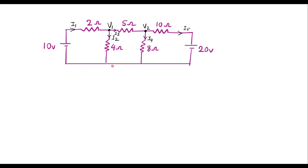We need to solve this using node analysis. In node analysis we apply Kirchhoff's current law to each non-reference node. V1 and V2 are the non-reference nodes. We assume the bottom node as the reference node whose voltage is 0, and we calculate V1 and V2 with respect to this reference node.